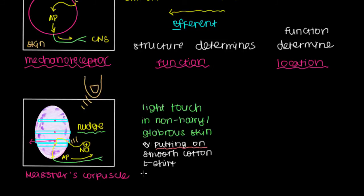And so a very important thing to keep in mind here is that Meissner's corpuscle, in order to fire, requires constantly, not constant, but constantly changing stimuli. Constantly changing stimuli.